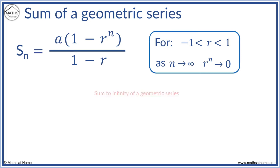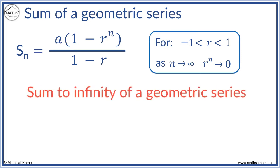This means we can find a formula for the sum to infinity of a geometric series. S_n, as n tends to infinity, becomes S of infinity.